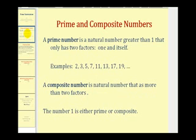A prime number is a natural number greater than one that has only two factors: one and itself. Here's a list of the first several prime numbers, and again these are prime because the only factors they have are one and itself.